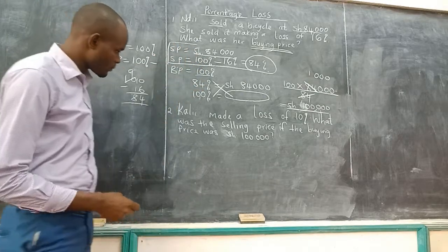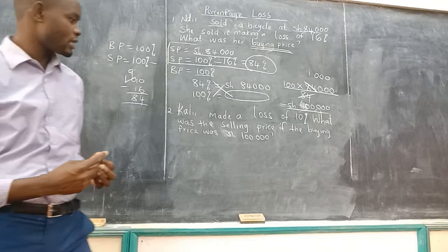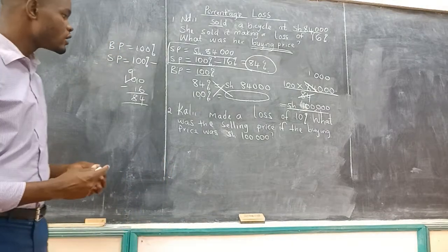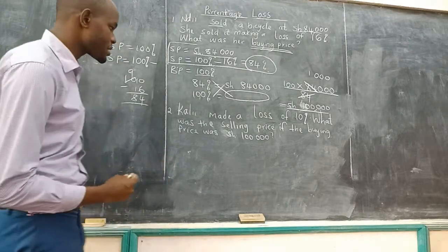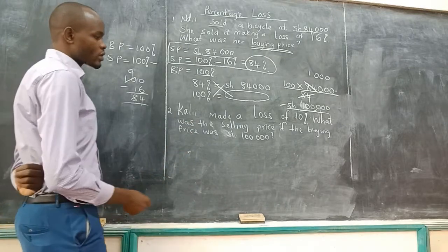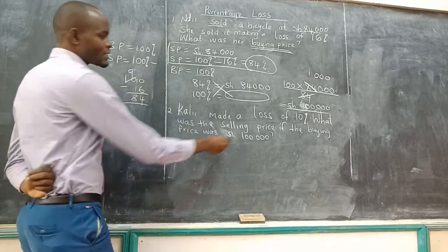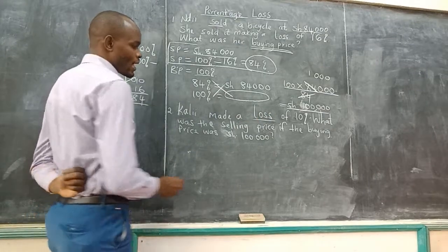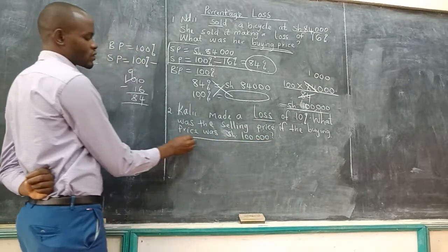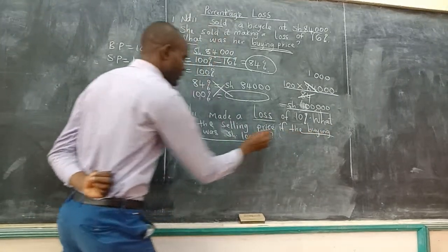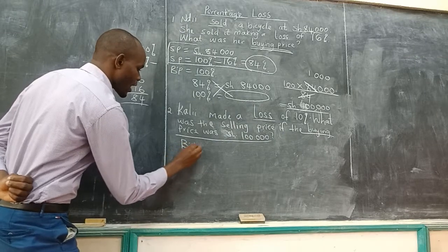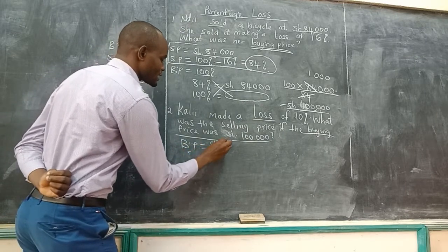Now the next question. Kalu made a loss of 10%. What was the selling price if the buying price was 100,000? Let us see what we are talking about here. This person is making loss, and the amount of money you are given in shillings, the buying price, is 100,000.